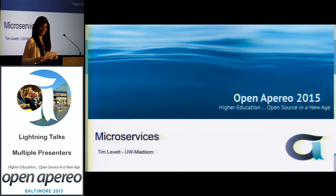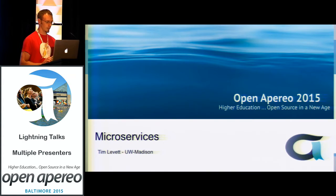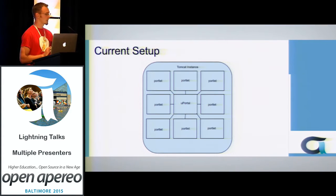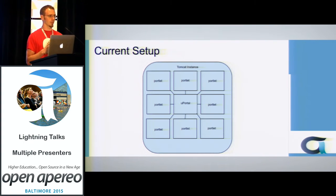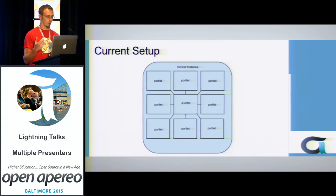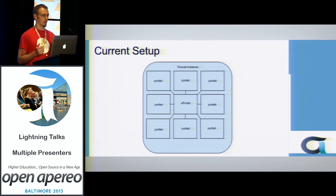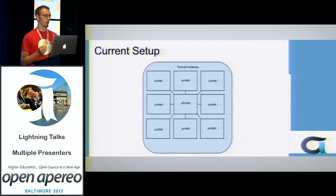I'm Tim Levitt. I'm from UW-Madison, and I'm going to talk to you a little bit about microservices. For uPortal right now, we have a concept of one JVM to rule them all. You have the uPortal instance, and then you have a bunch of portlets that all talk to it via a shared library. This is very helpful for certain instances, but it has problems with scalability.